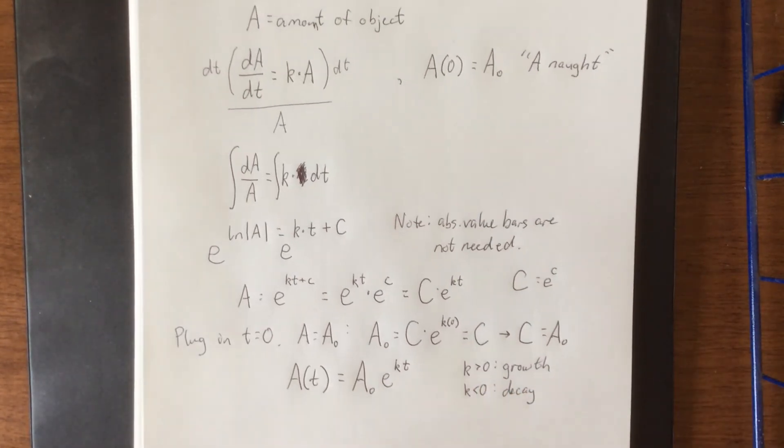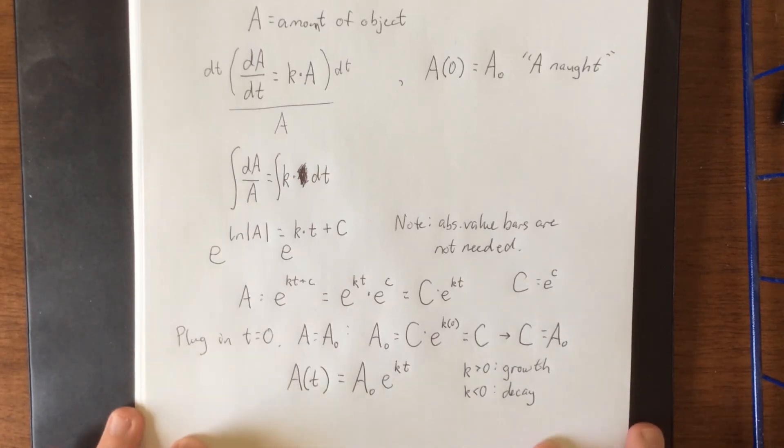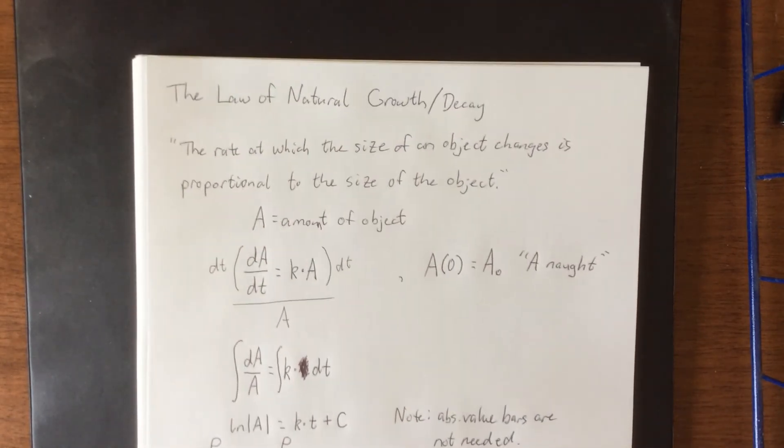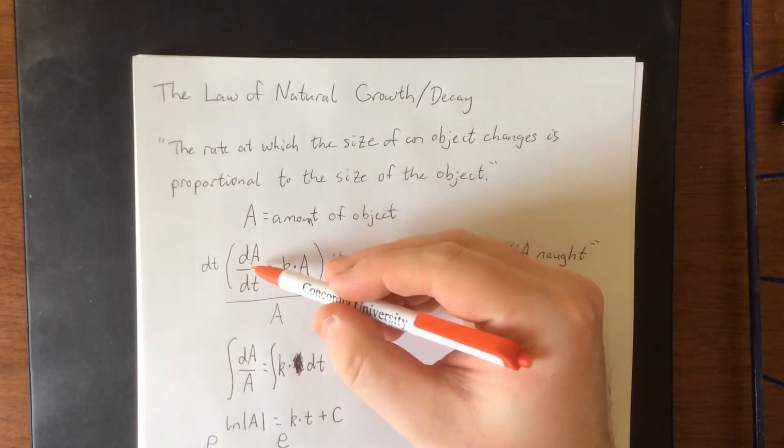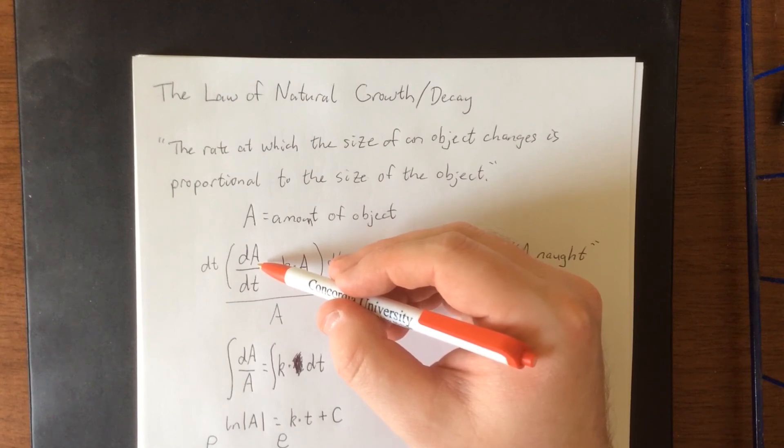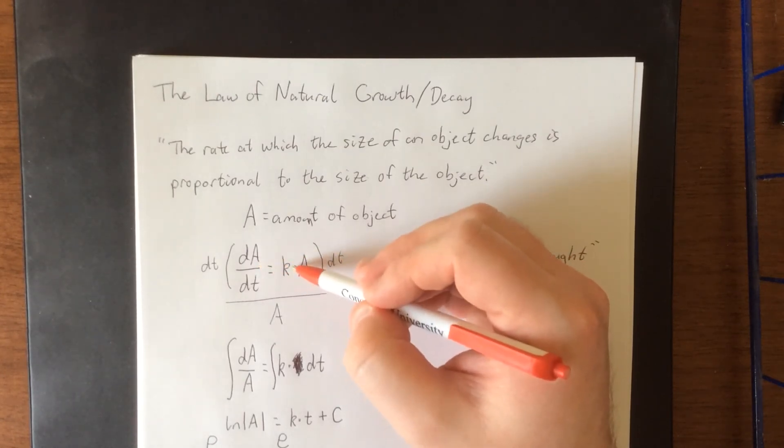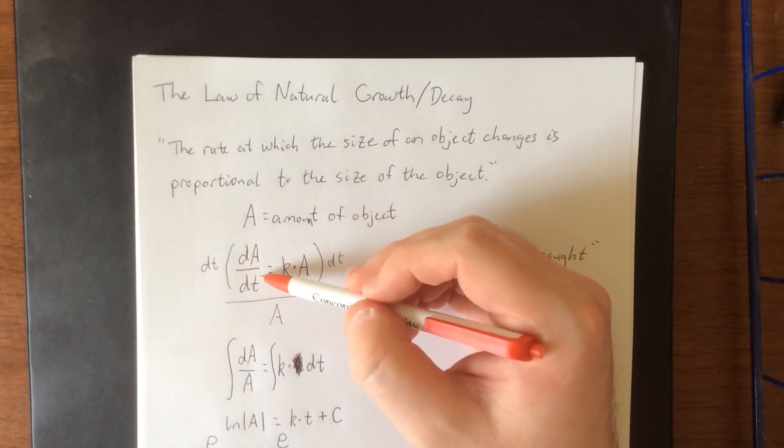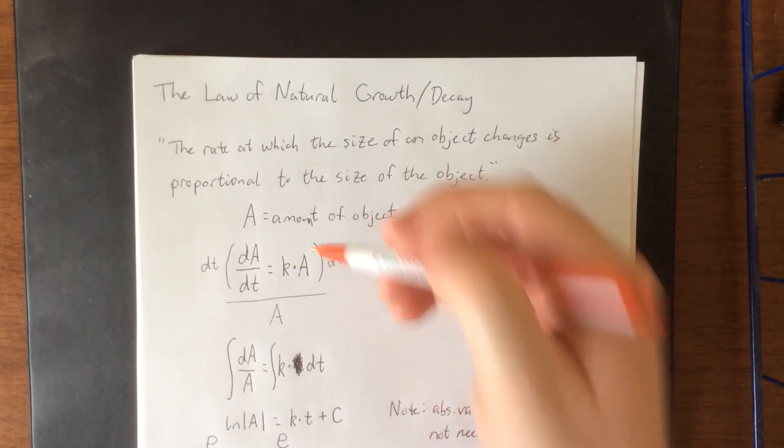The reason we know that is not because of what we have at the end, but rather our original differential equation. If k is positive, this means your derivative is positive, which indicates something is increasing in size. If k is negative, this indicates the derivative is negative, indicating the thing is decreasing in size.